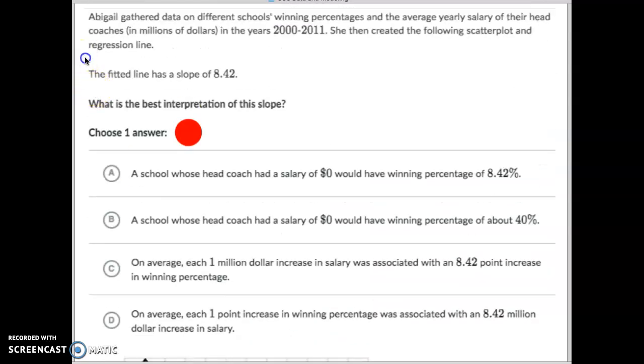We care about, again, your slope. So, B, a school whose head coach had a salary of zero. Again, that would be the y-intercept. We're not concerned about the y-intercept. Even though this statement is true, that they'd have a winning percentage of 40%, that's talking about the y-intercept.